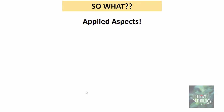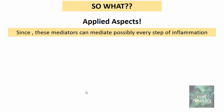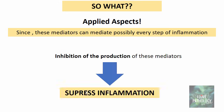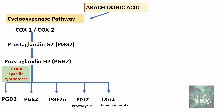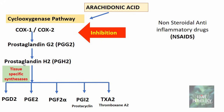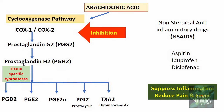This is where we need to understand the applied aspects. Since these mediators can mediate possibly every step of inflammation, inhibition of their production can suppress inflammation. This is the fundamental principle behind anti-inflammatory drugs. Coming back to arachidonic acid metabolism via the cyclooxygenase pathway: if there is inhibition of cyclooxygenase 1 or 2, all prostaglandin production will be stopped. This is what is brought about by non-steroidal anti-inflammatory drugs like aspirin, ibuprofen and diclofenac — they inhibit the cyclooxygenase pathway, suppressing inflammation and reducing pain and fever.